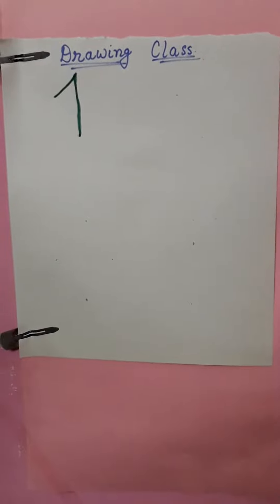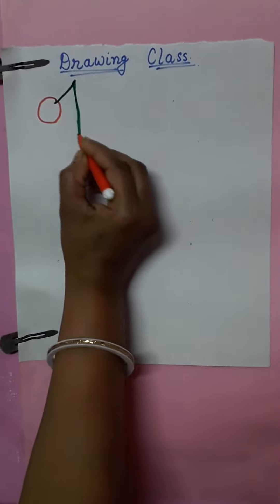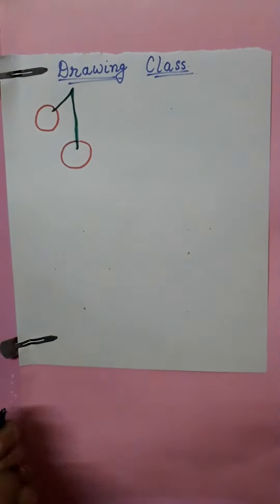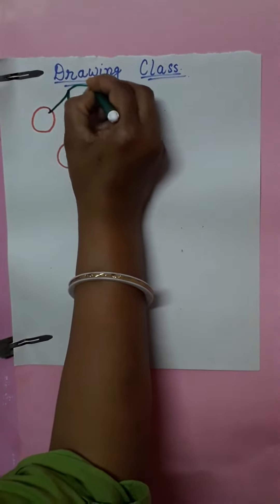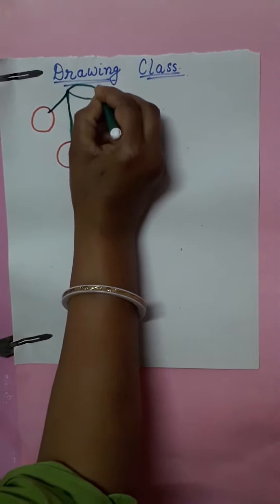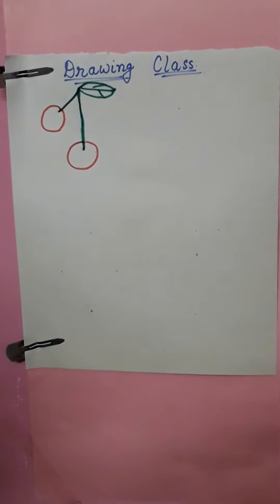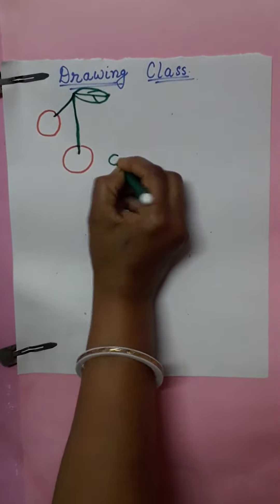Now what you will do, just make one circle here, another circle here and our curve, second curve, sleeping line, slanting line. This becomes a cherry. C for cherry.